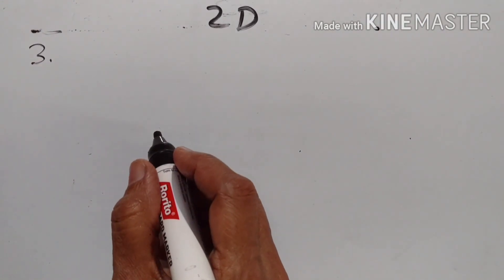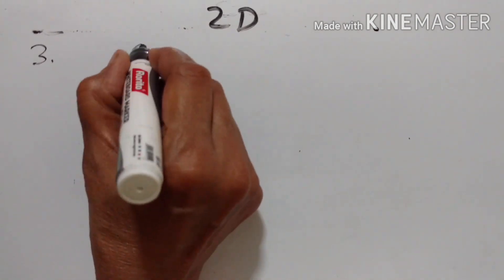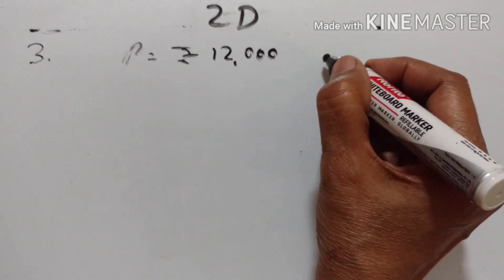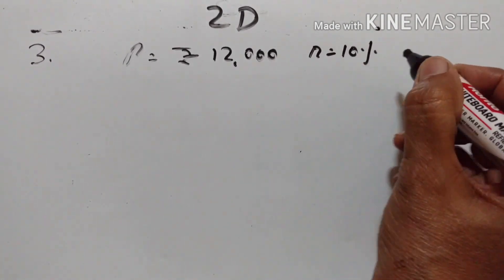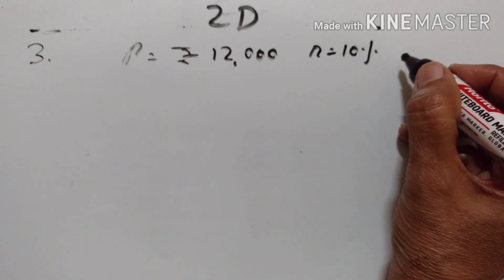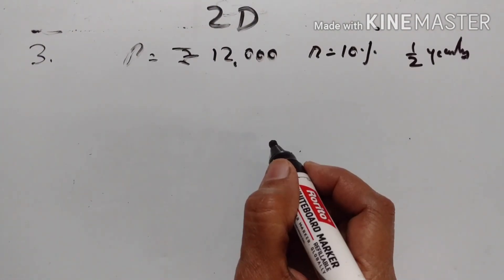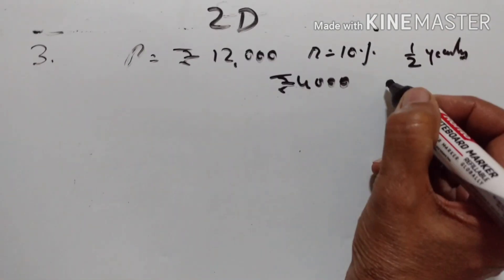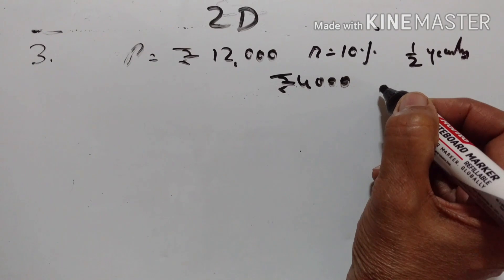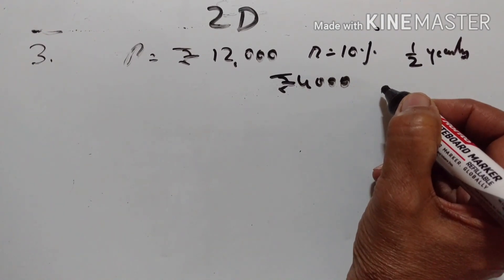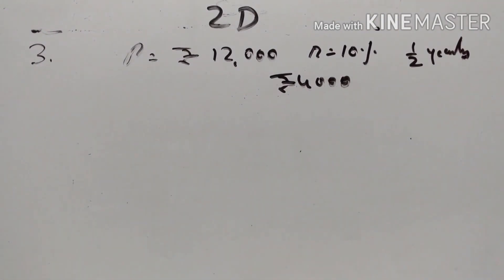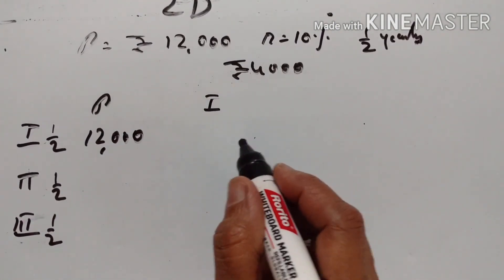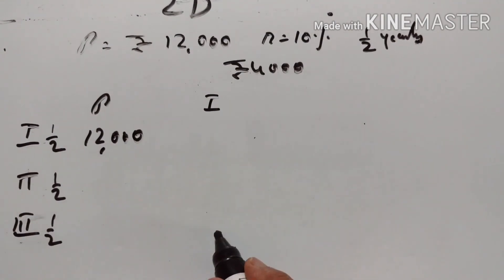Third problem: Drashina borrows Rs. 12,000 — P is equal to Rs. 12,000 — at 10% per annum, compounded half yearly. She repays Rs. 4,000 at the end of every 6 months. Calculate the third payment she has to make at the end of 18 months in order to clear the entire loan. Interest is 10% half yearly.